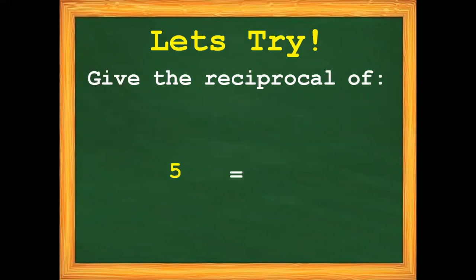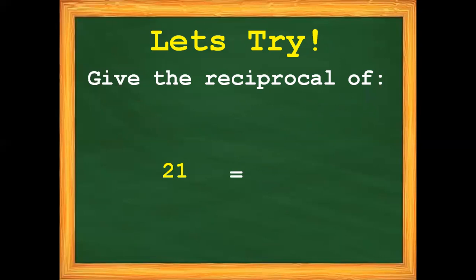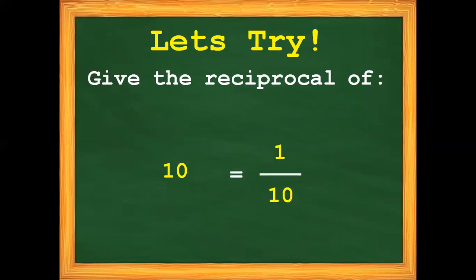Now let's try. Give the reciprocal of 5. Following the steps from a while ago, 5 has a reciprocal of 1 fifth. Another — we have 21. So the reciprocal of 21 is 1 over 21. How about 10? The reciprocal of 10 is 1 over 10.